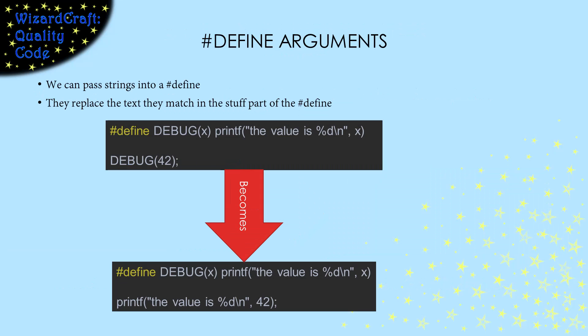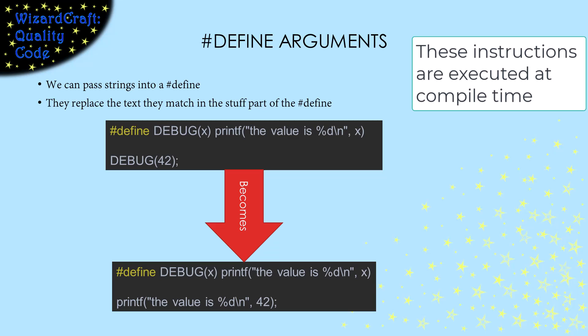Pound defines are even more powerful than that. We can pass things into pound defines. In this example, the pound define has a parameter of x, which is used here in the replacement string. When we invoke the define with a 42, the 42 replaces x in the pound defines replacement string. Now it's important to really understand what is happening here. First, remember that we're giving instructions to the preprocessor at compilation time. So these replacements happened before the compiler even runs.